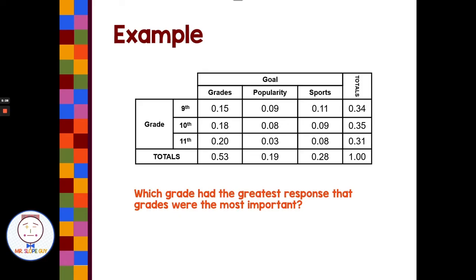Which grade had the greatest response that grades were the most important? All right, let's look here at grades. We're just looking at the column that has to do with grades. We have 0.15, 0.18, 0.20. Well, 11th graders thought grades were most important, probably because they're applying to colleges and you want to have a great GPA to get into the college you'd like to go to.